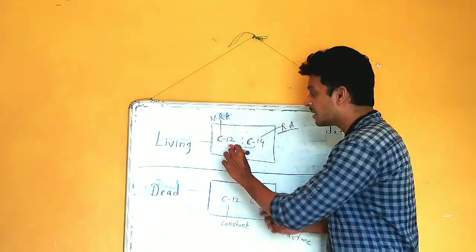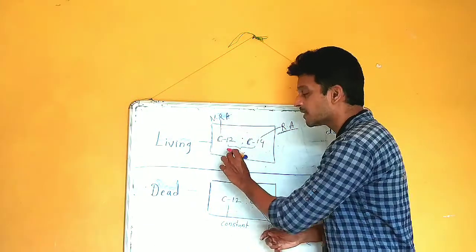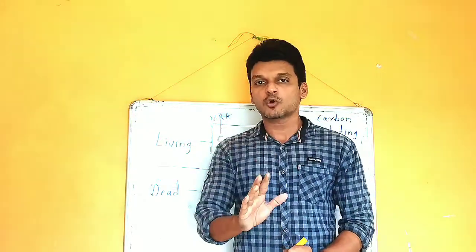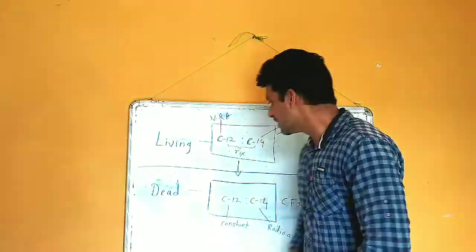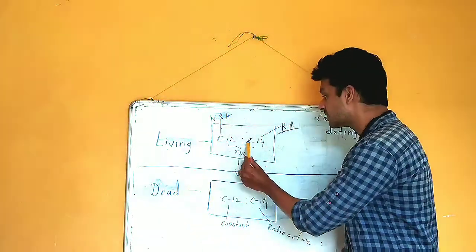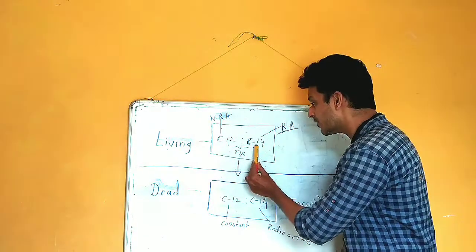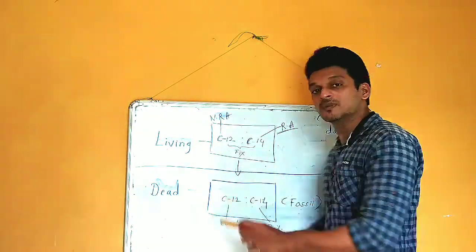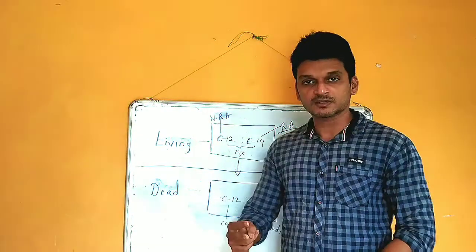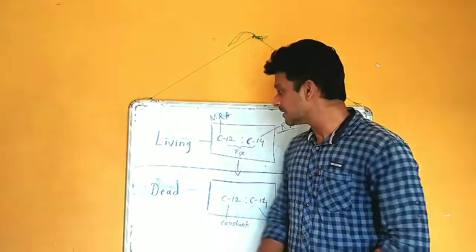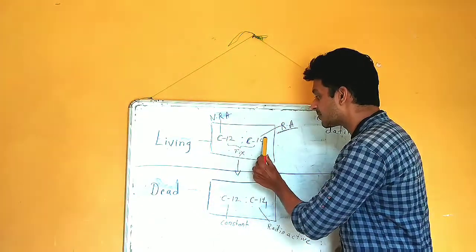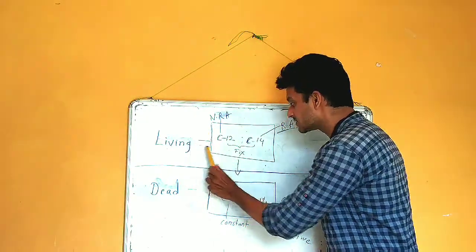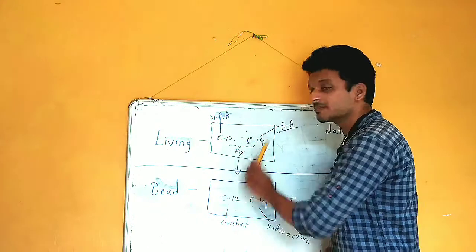The amount of carbon-12 in the body of that organism will always remain constant. But since carbon-14 is radioactive, because of decay, its amount will keep on decreasing. However, the ratio of carbon-12 to carbon-14 in the body of a living organism always remains fixed.